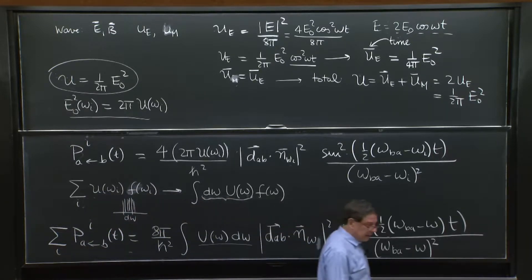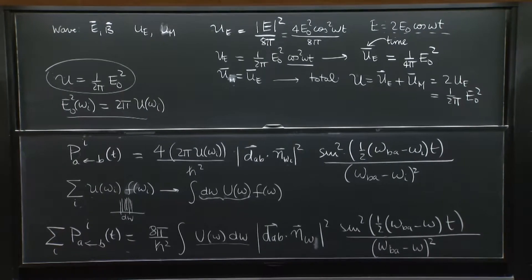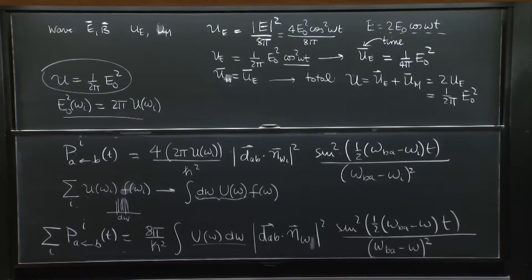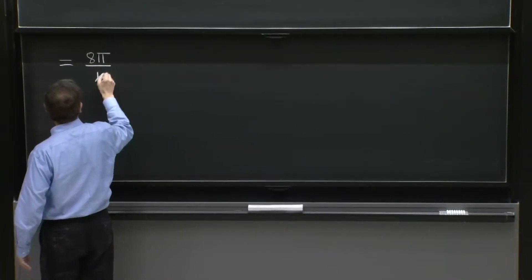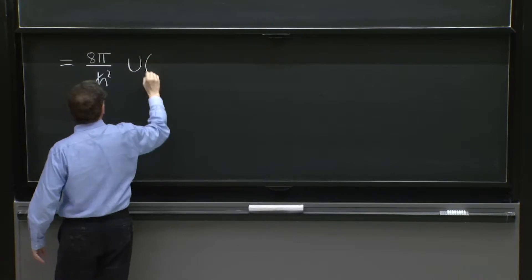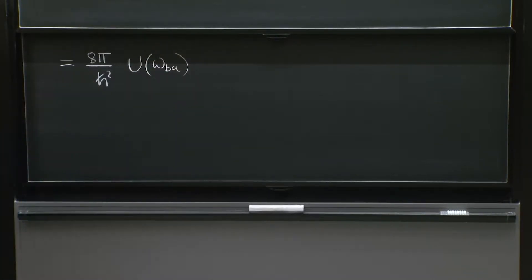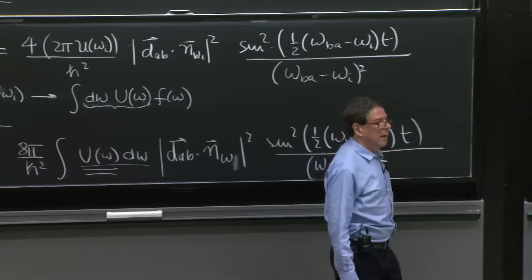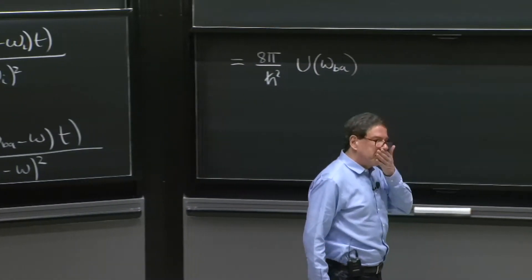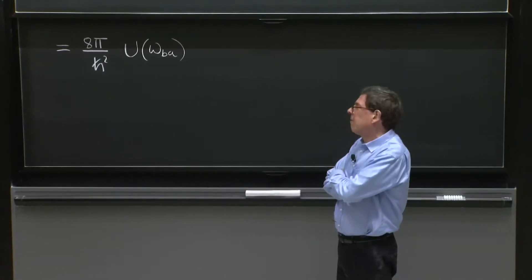So it's 8π over h squared. I'll take the u at omega BA out of the integral, this factor. And I want to take this one out as well. But this one is a little funny.